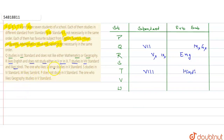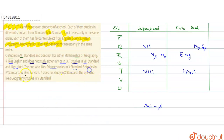The one who likes Science studies in 10th standard — जिसको Science पसंद है वो 10th में है. हम लिख लेते हैं: Science and 10th. S studies in 4th standard — तो S के standard में 4th आएगा. W likes Sanskrit — तो W के subject में Sanskrit आएगा.